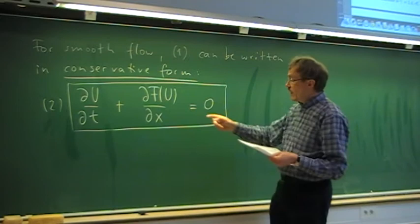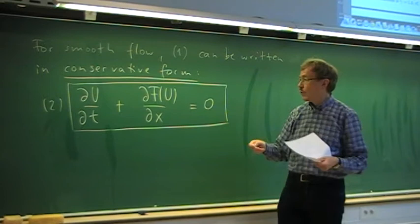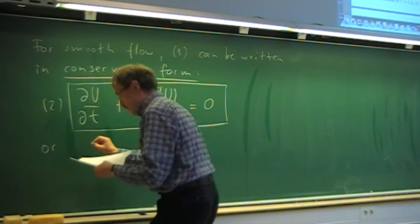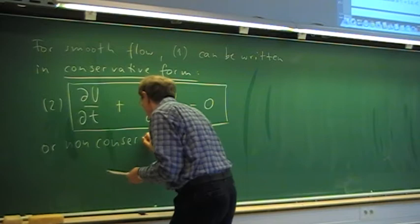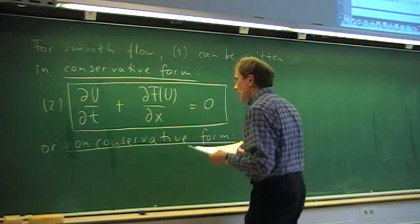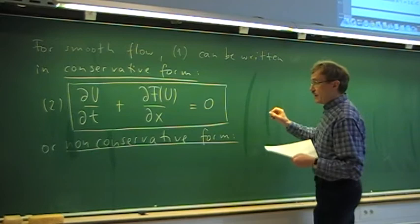But we can also write that in non-conservative form. Here we have conservative form because the flux is under a derivative — or in higher dimensions, it would be the divergence of a flux tensor. We can also write it in non-conservative form or quasilinear form. The quasilinear form uses the Jacobian.